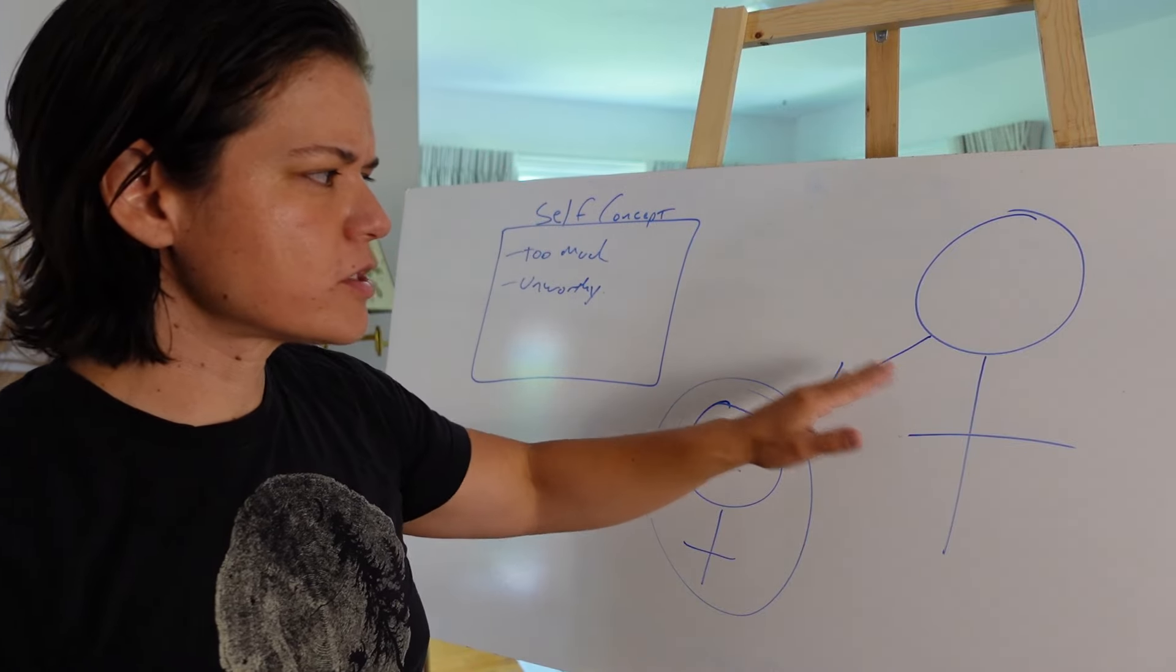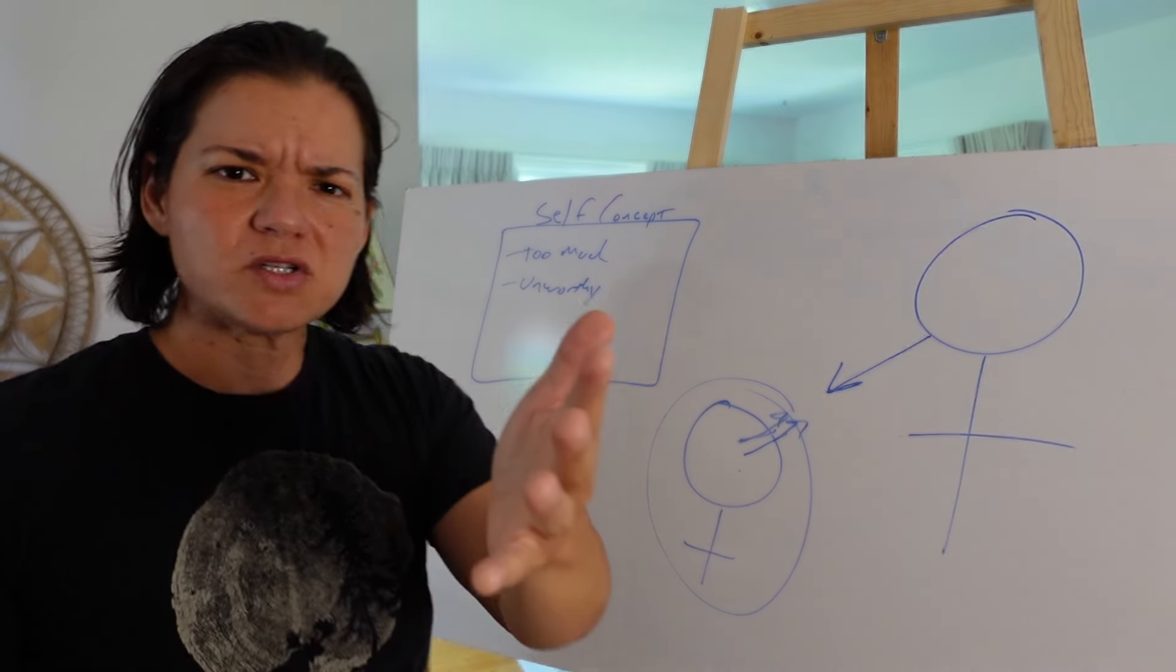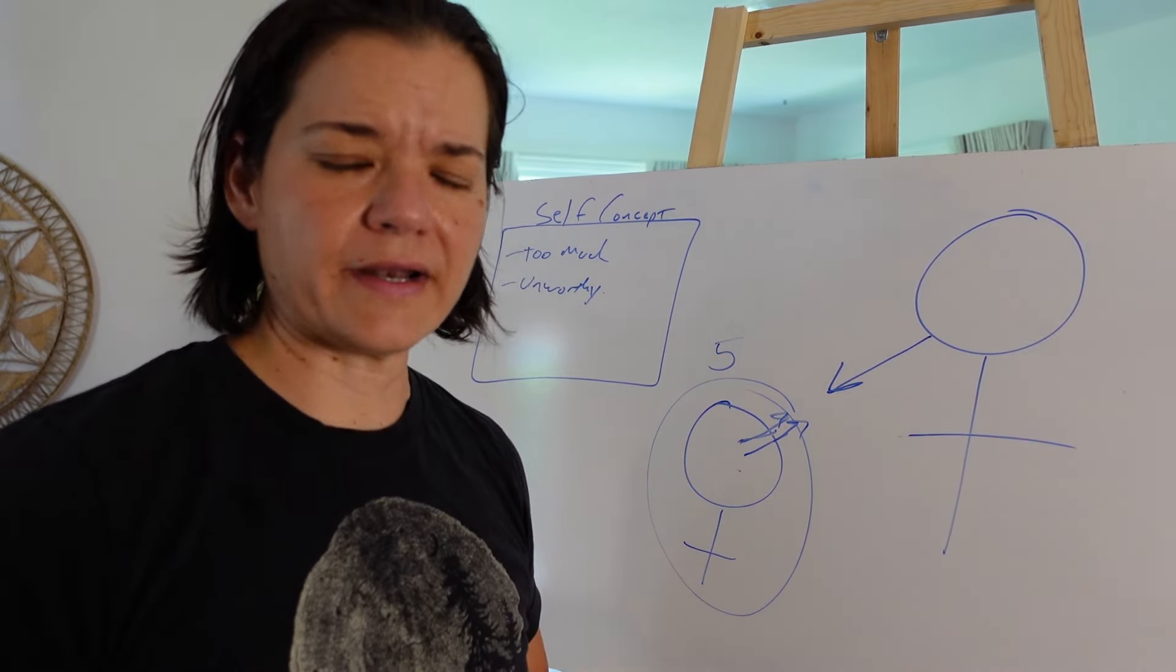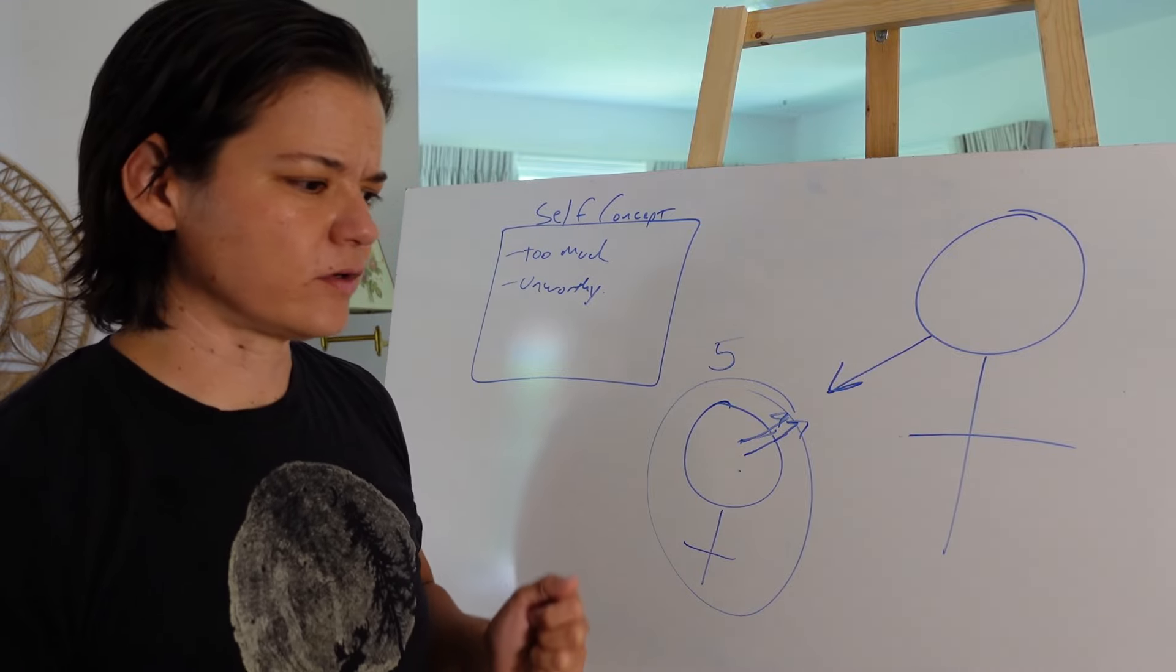Okay. So the more and more you start to understand, okay, your adult mind, say this was five-year-old you, do you know a five-year-old right now? Right? Think of that five-year-old. Think that if me and you walked into a store and we saw that five-year-old be treated this way...